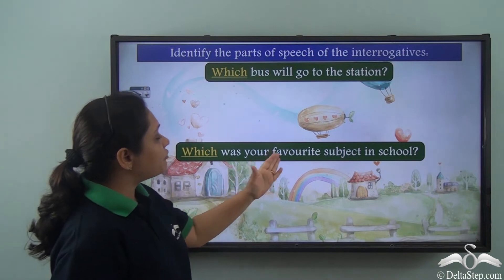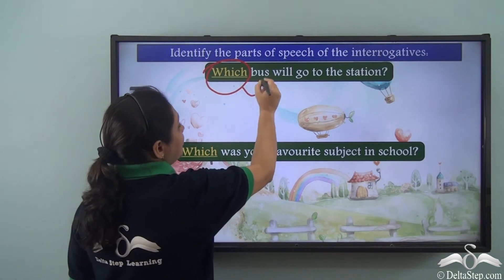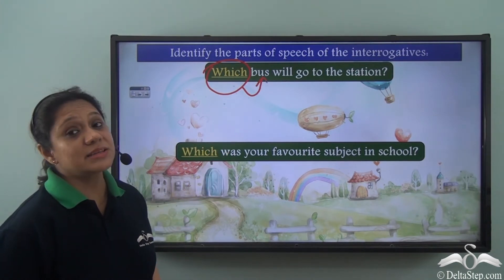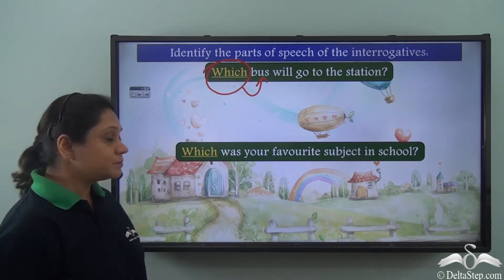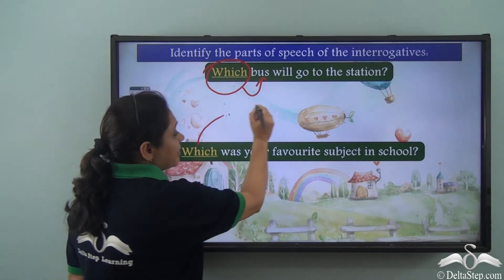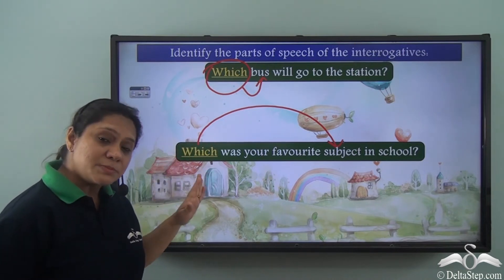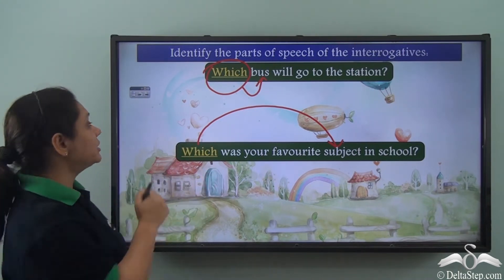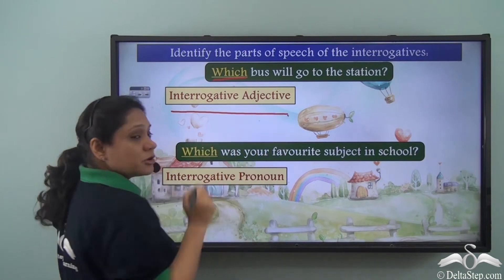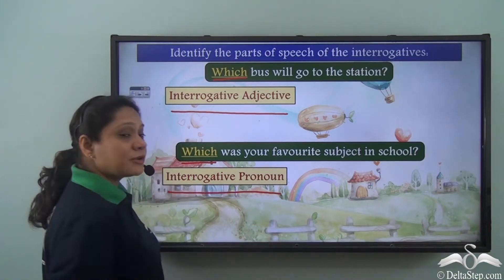Now consider: 'Which bus will go to the station?' and 'Which was your favorite subject in school?' In the first sentence, 'which' modifies the noun 'bus', so it has been used as an interrogative adjective. In the second sentence, 'which' refers to the noun 'subject', so it has been used as an interrogative pronoun.